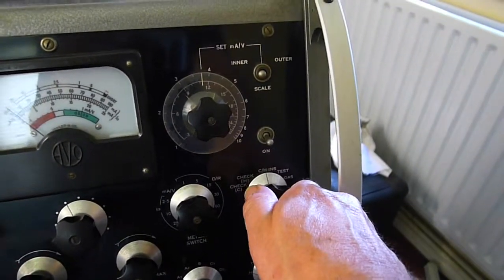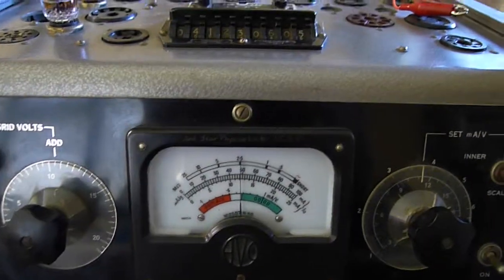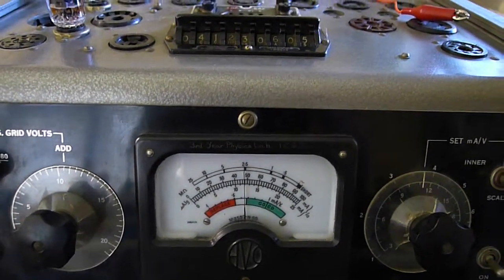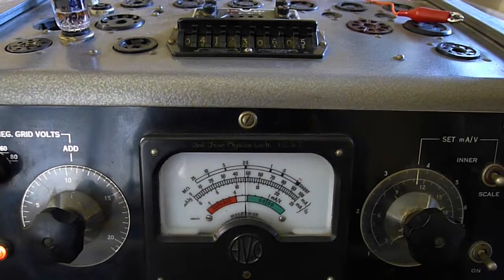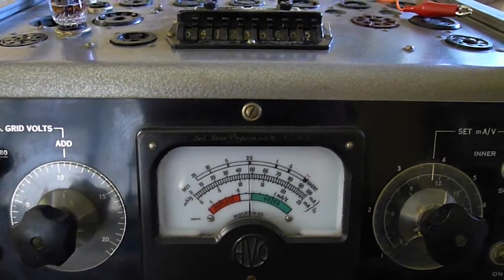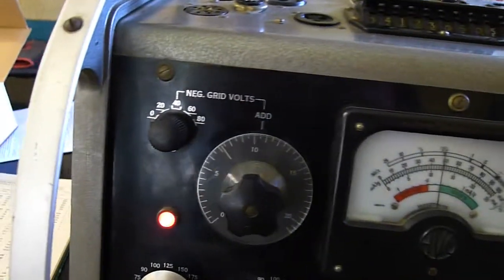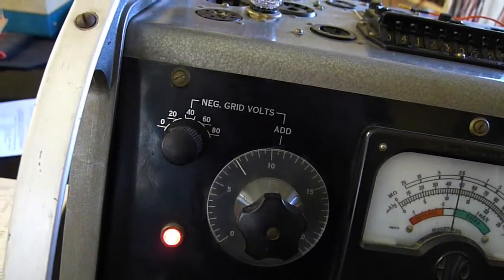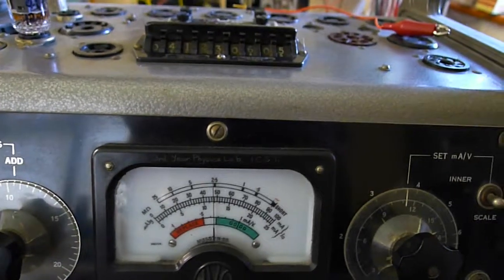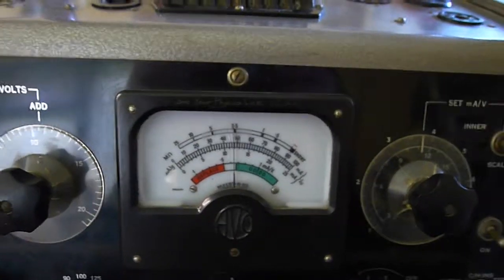So then we can go to the test position. Switch it to test, and the meter goes up, showing the current. This looks like it's near enough 48 milliamps. As this control here is a bit sensitive, but it's near enough 7.3 as in the book. 48 milliamps is near enough.